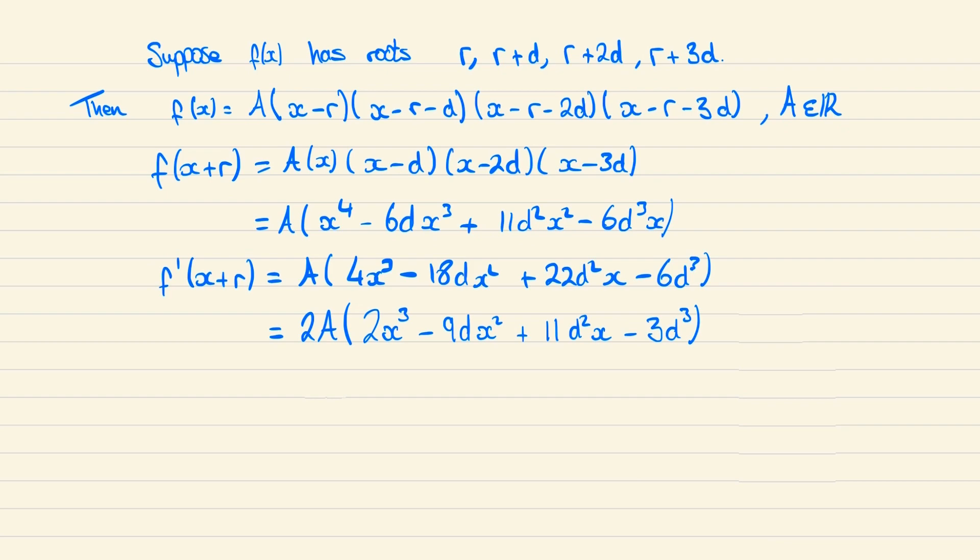And now we want to try and factorize this cubic. So one factor we might consider is 2x minus 3d. Then this would mean the second polynomial would need to start with an x squared to give us the 2x cubed.